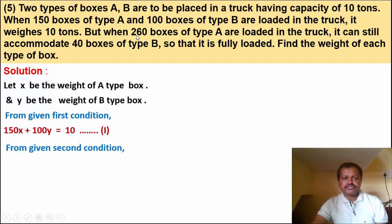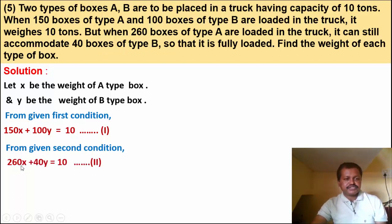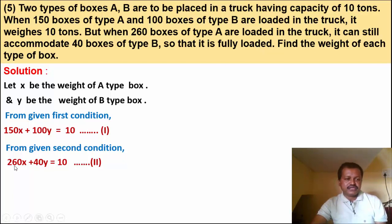From the second condition: 260 boxes of type A and 40 boxes of type B fill the truck. So 260x plus 40y is equal to 10. This is equation number 2.